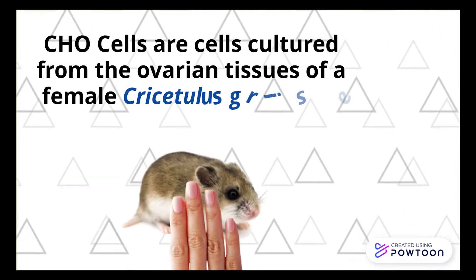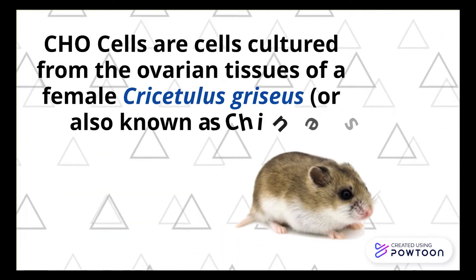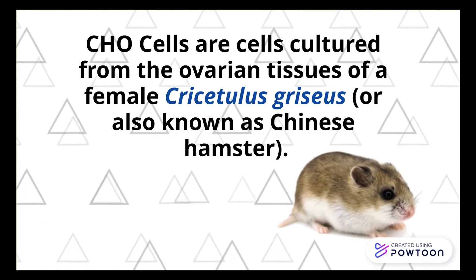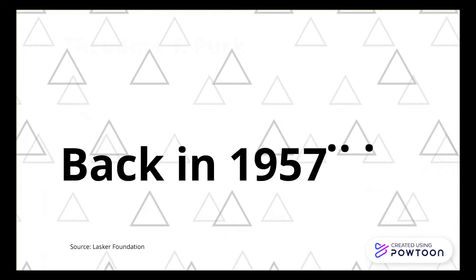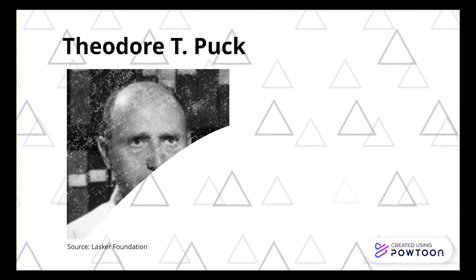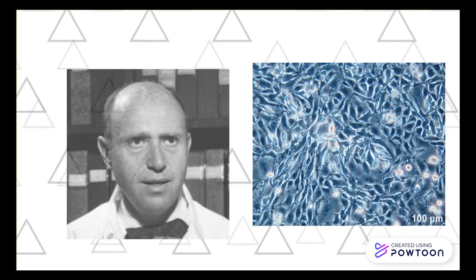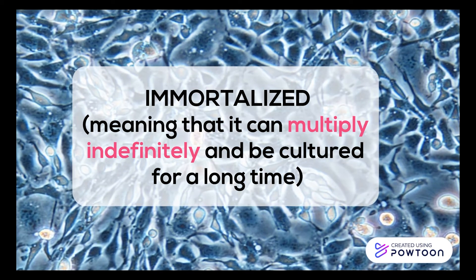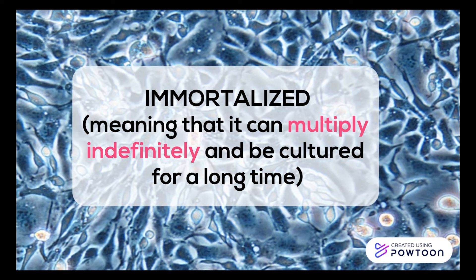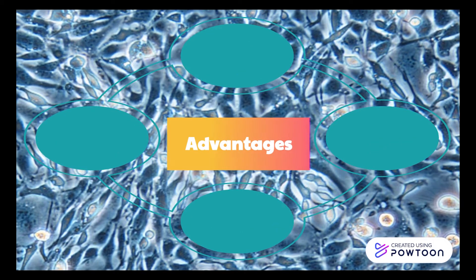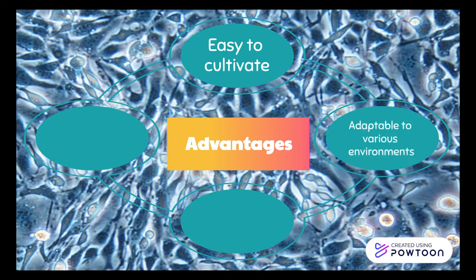Back in 1957, a researcher named Theodore decided to isolate the cells and noticed that the cells spontaneously immortalize upon culturing. Along with their advantages, they are easy to cultivate, adaptable, and easy to transfect genes.